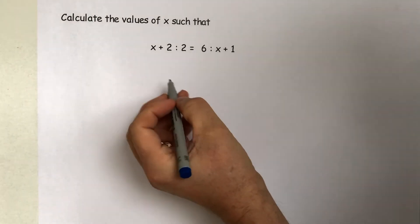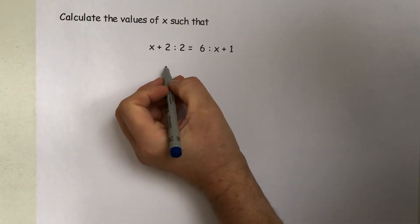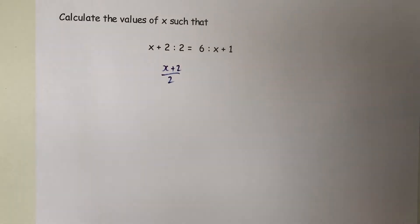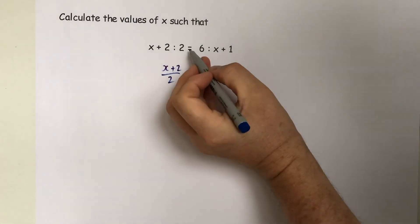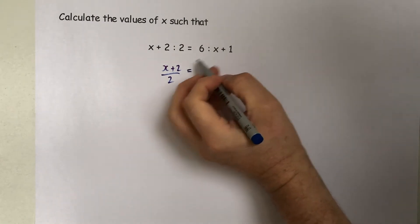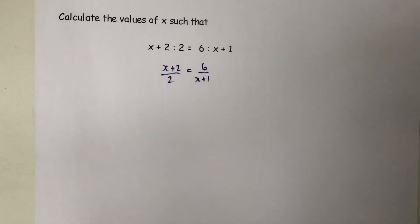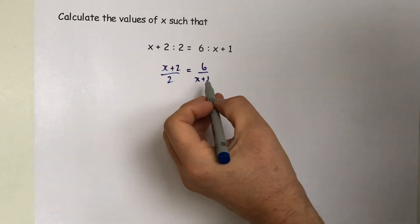In order to answer a question like this, first of all express the ratio as a fraction. So the first ratio can be written as that fraction equals, and the second ratio as that fraction.